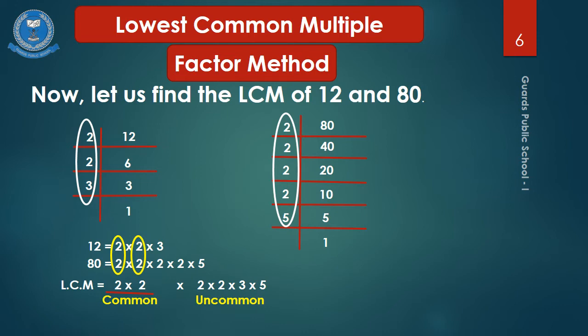The remaining numbers that are not common are written as single values. We have written two, two, three, and five separately. The common factors — two multiplied by two — are paired together, and the uncommon numbers are written on one side. Now we multiply all the common and uncommon numbers together, and the LCM is 240.